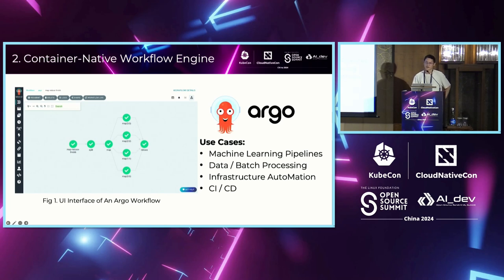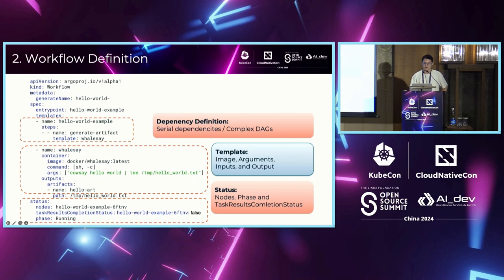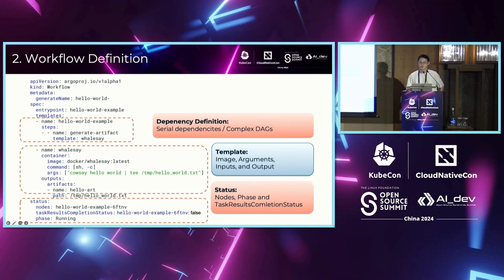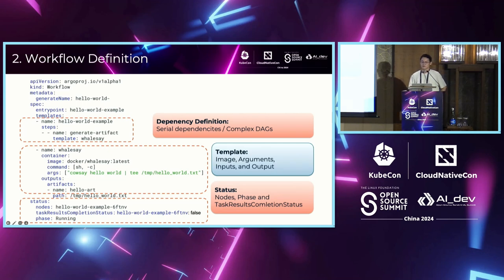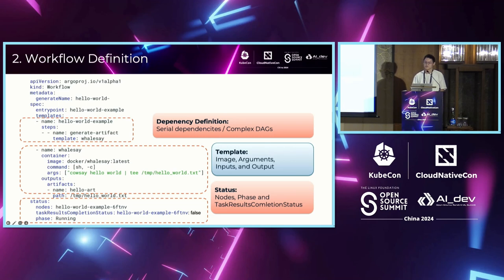Argo Workflows is implemented as a Kubernetes CRD. A simple example mainly consists of three parts. The first is the definition of logical relationships, which can be sequential steps or a complex DAG. The second is a template, which contains images, inputs, volumes, outputs, and args — representing the definition of a task. The third is node status, recording the completion status of each step, added automatically by the workflow controller during running.